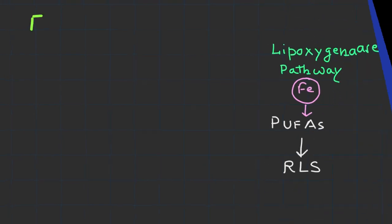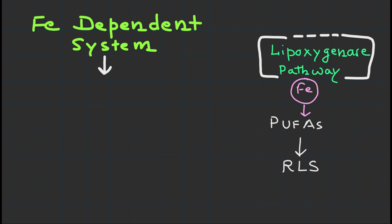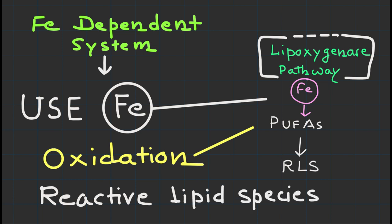Another critical component in ferroptosis is the iron-dependent enzyme system called lipoxygenase pathway. This pathway utilizes iron to catalyze the oxidation of PUFA, generating reactive lipid species that can promote ferroptotic cell death.